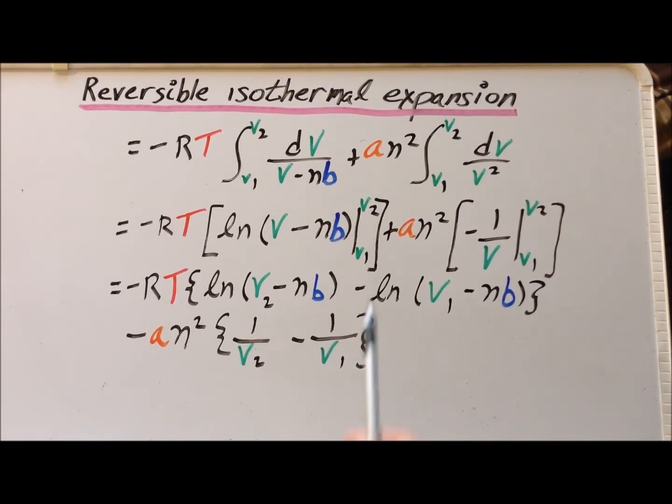Then if we evaluate at the limits, we get that the work of reversible isothermal expansion for the van der Waals gas is going to be minus RT times the quantity natural log of V2 minus NB minus natural log of V1 minus NB minus AN squared times the quantity 1 over V2 minus 1 over V1. We have to be careful of our minus sign that we pull out in front.